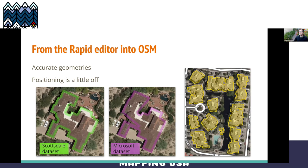Once it was in the Rapid editor, I decided to use Rapid. I usually use iD, but I really wanted some experience with Rapid, and I'm glad I did so I could really understand all its features. You can see here that on the left, the data from the Scottsdale dataset is almost perfect geometry — I just love these building footprints — compared to the Microsoft database in the purplish color here.